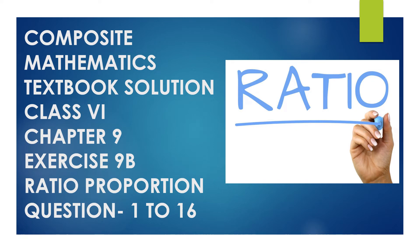Hello everyone, this is Mamata Moon. Today we will learn and solve exercise 9B questions, chapter 9 — ratio and proportion — questions 1 to 5 of class 6 composite mathematics textbook. Please subscribe to my YouTube channel, hit the bell icon for notifications, visit my blog mathsglad.com, and join my Telegram group. Link is in the description box.